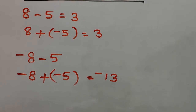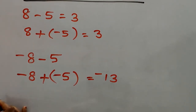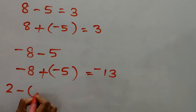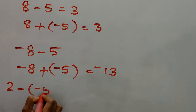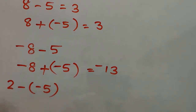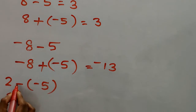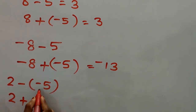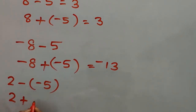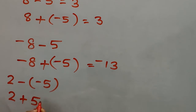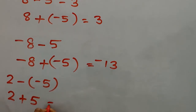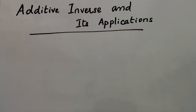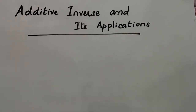Next, if the question is 2 minus negative 5: the first number is 2, I'm going to change subtraction to addition. The additive inverse of negative 5 is positive 5. And 2 plus 5 equals 7.